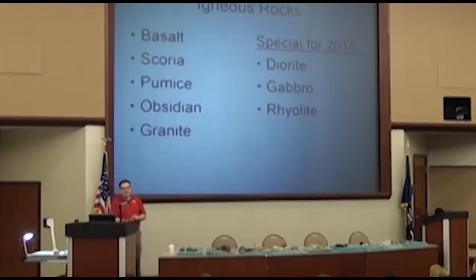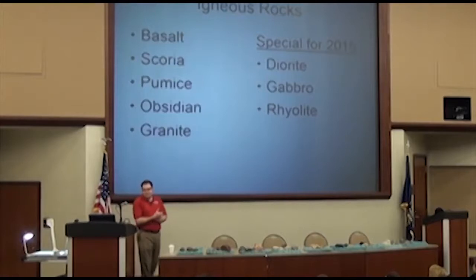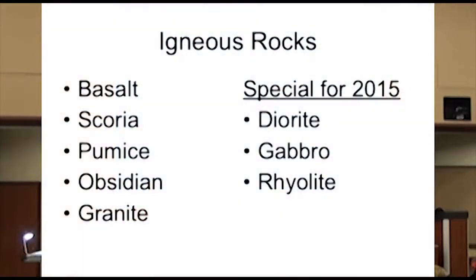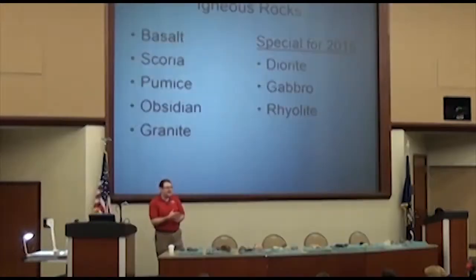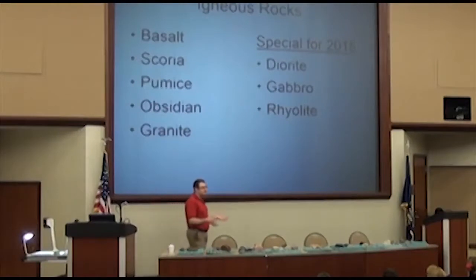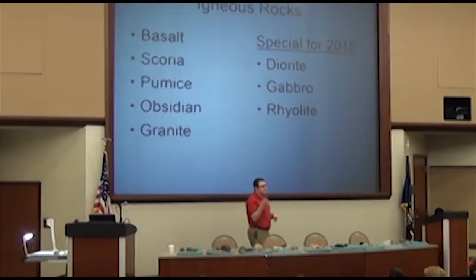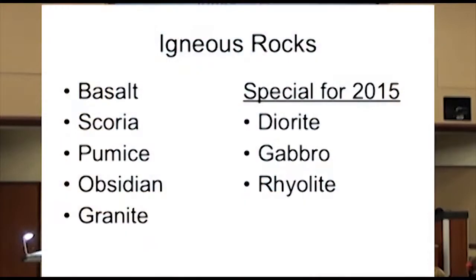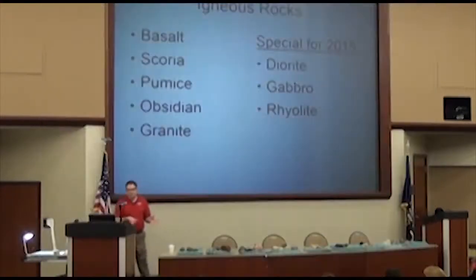So to get into the rocks we're going to talk about, we first have the rocks that have been on the list for years: basalt, scoria, pumice, obsidian, and granite. Now this year, just special for this year, we added three rocks and three minerals. The three rocks added for this year are igneous rocks — diorite, gabbro, and rhyolite. I'm going to talk about each one of these rocks.